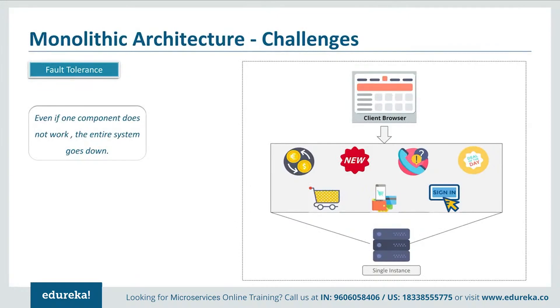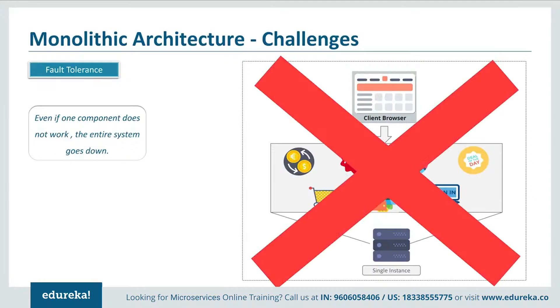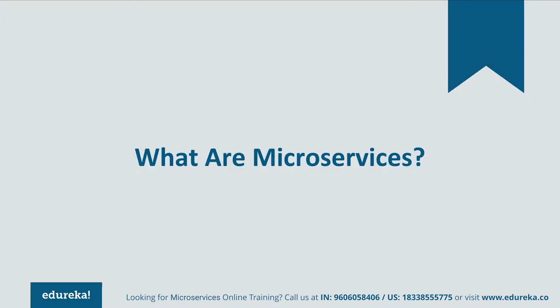The third challenge is Fault Tolerance. Consider your shopping cart application — if even one feature of the application doesn't work, then the entire system goes down. This not only creates a problem for the users but also for the developers, as they have to rebuild it again. To avoid these challenges, developers decided to shift from monolithic architecture to microservices.